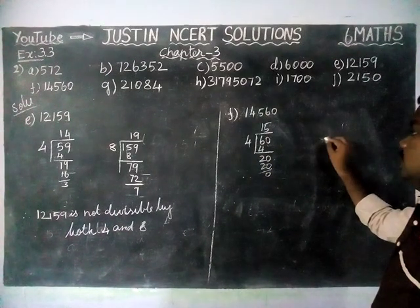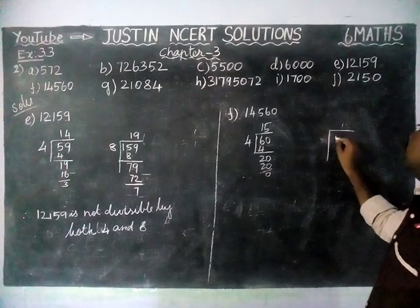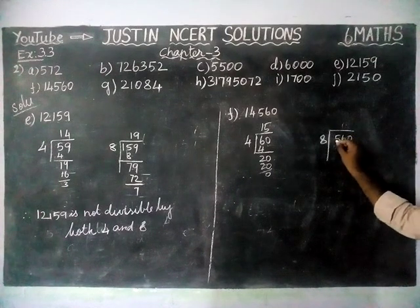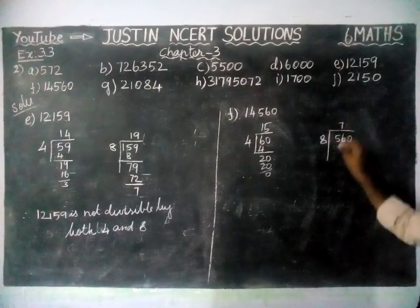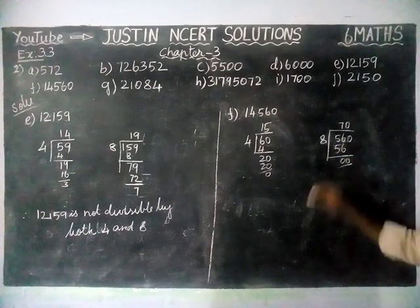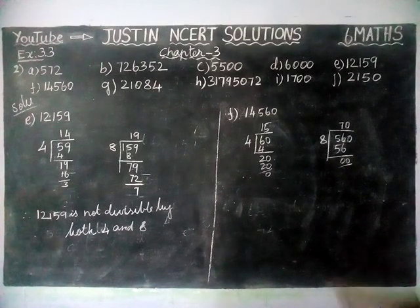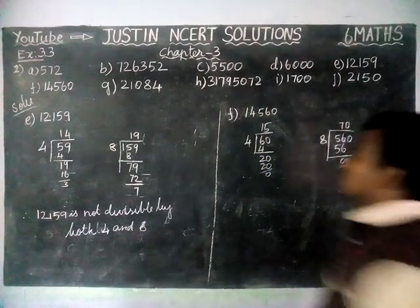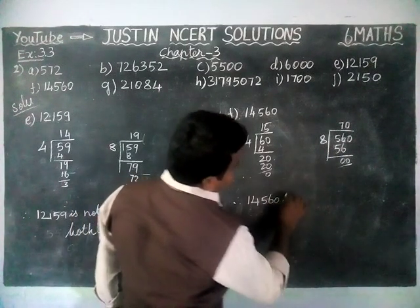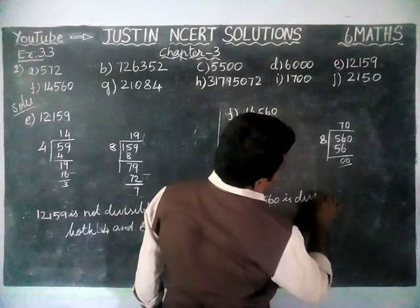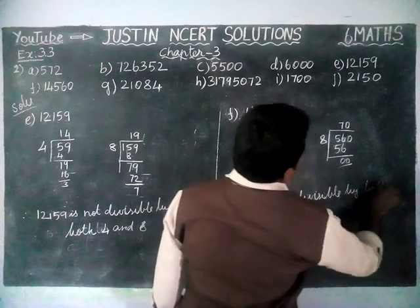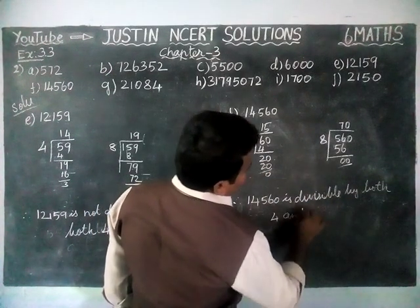Next, we check divisibility by 8. The last 3 digits are 560. Dividing 560 by 8: in 56, 8 sevens are 56, remaining 0, and the next digit is 0. So the given number is divisible by both 4 and 8. Therefore 14,560 is divisible by both 4 and 8.